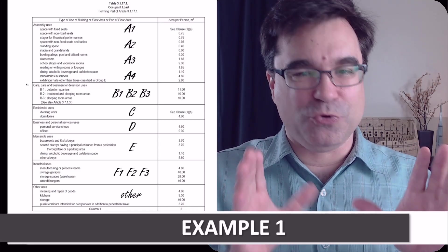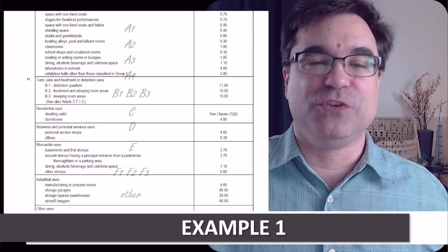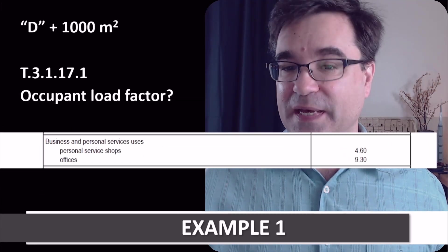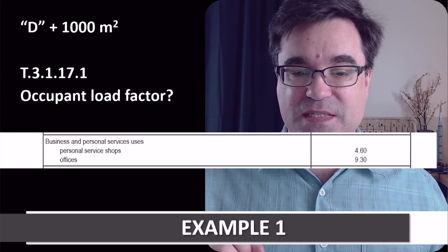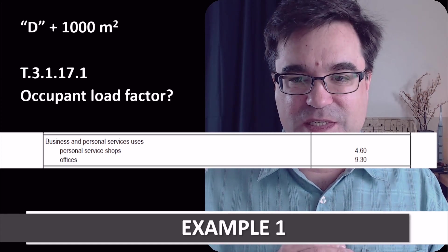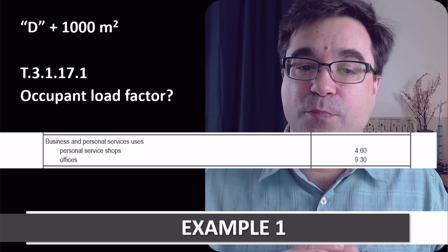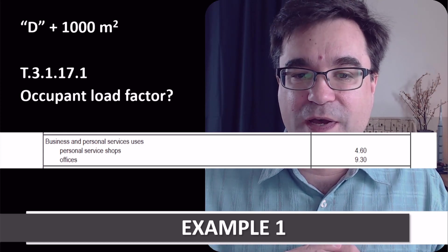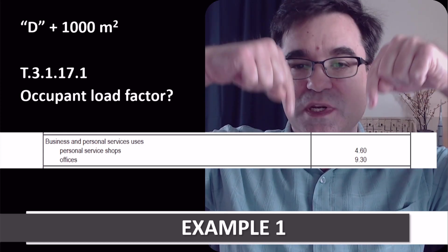Great. Back to our example. Remember that? So, for this example, we determined that office space is a D occupancy. So, the appropriate portion of Table 3.1.17.1 is right here. I'm showing it right here. Under business and personal services.